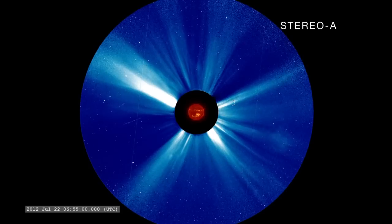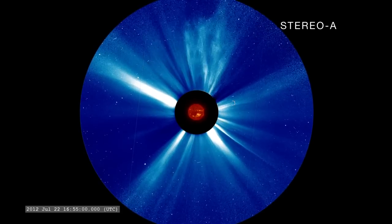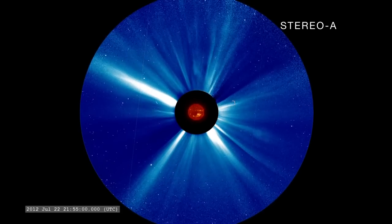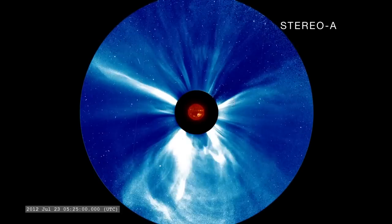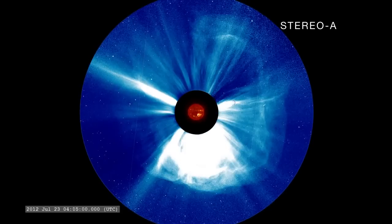The STEREO satellites also carry coronagraphs, which block the bright solar disk to make the fainter extended solar atmosphere, or corona, visible. As a result, they were able to image the actual CME as it left the Sun.